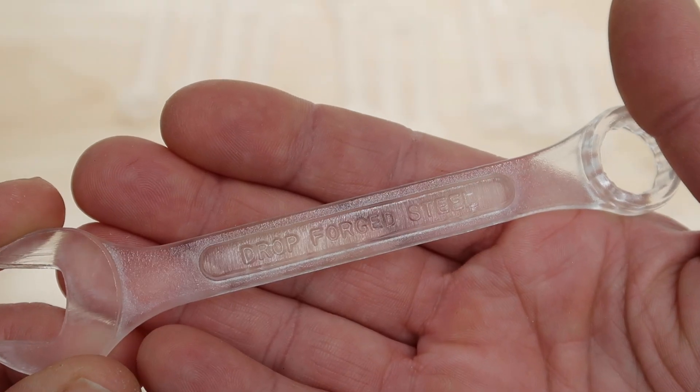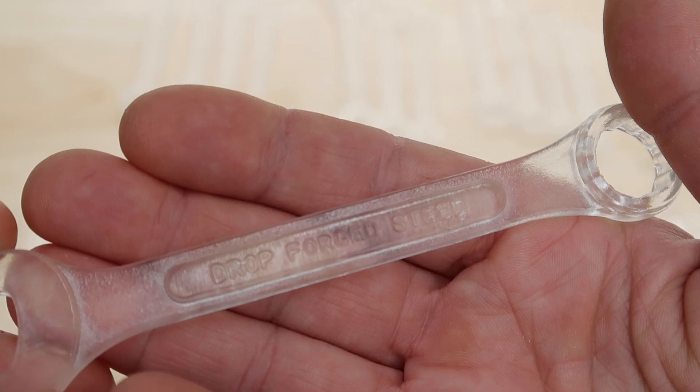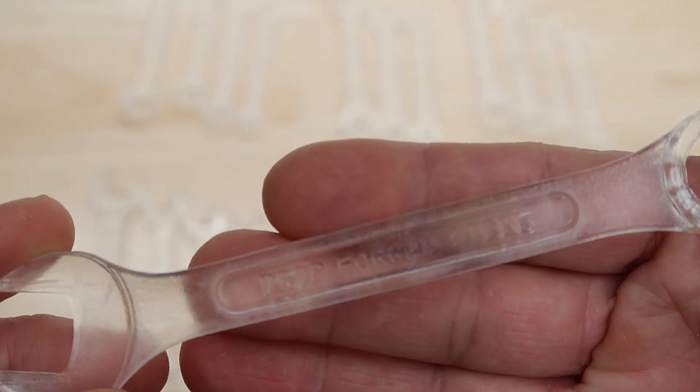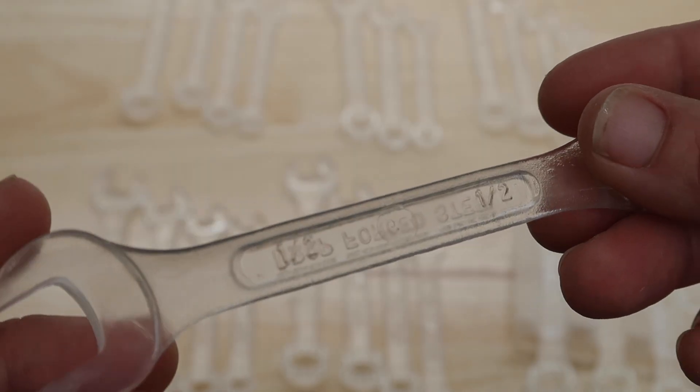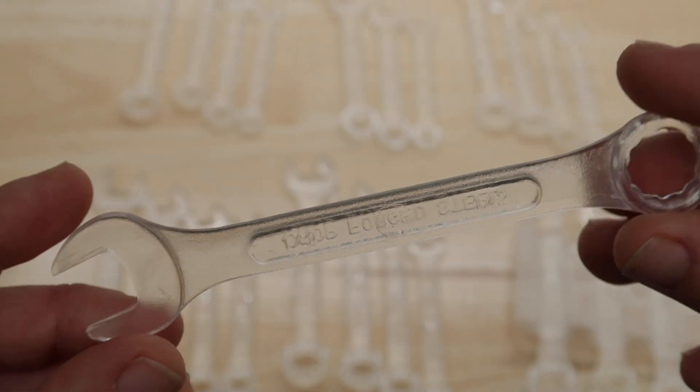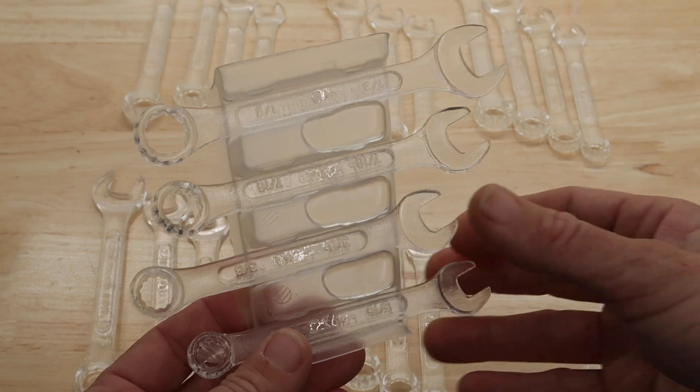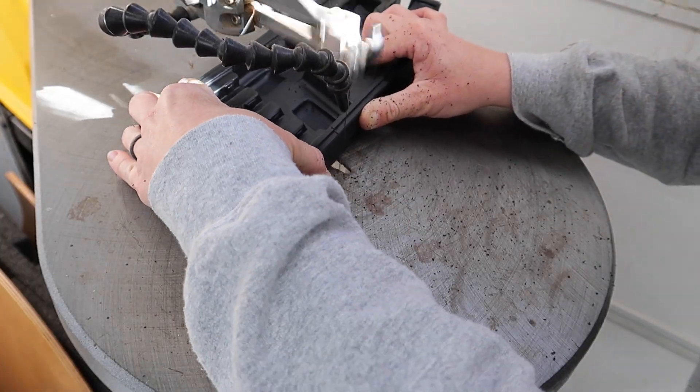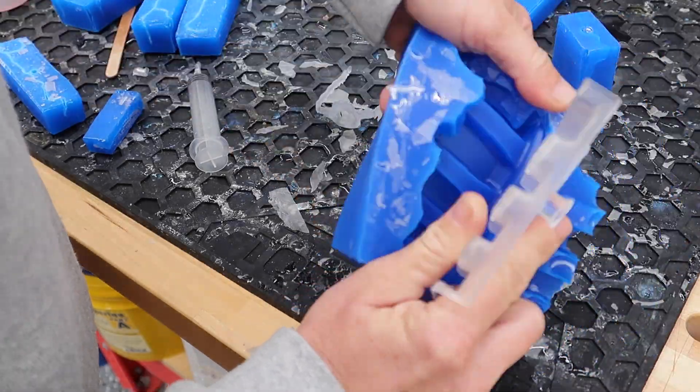These little wrenches were probably the easiest to cast and to break out of the mold. They came out so nice. I love that you can see that it says 'drop forged steel' and then on the other side you can see the measurement. They just turned out great.